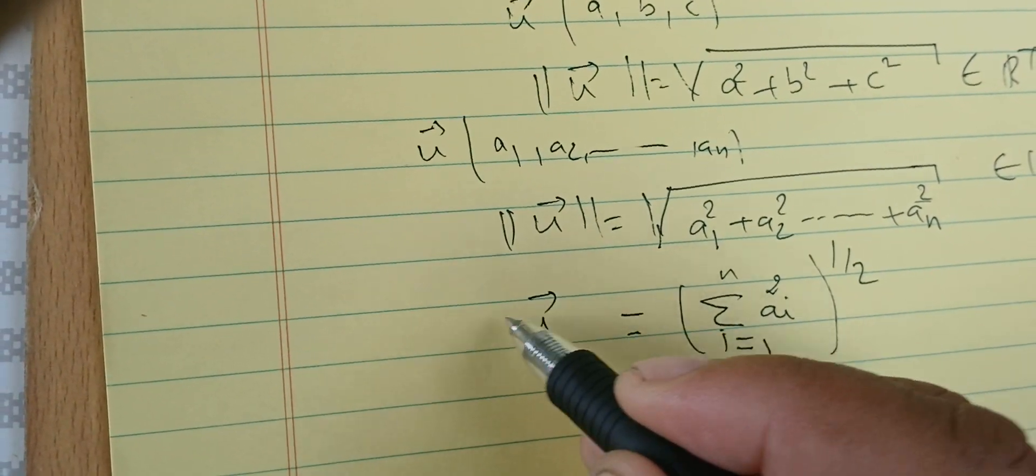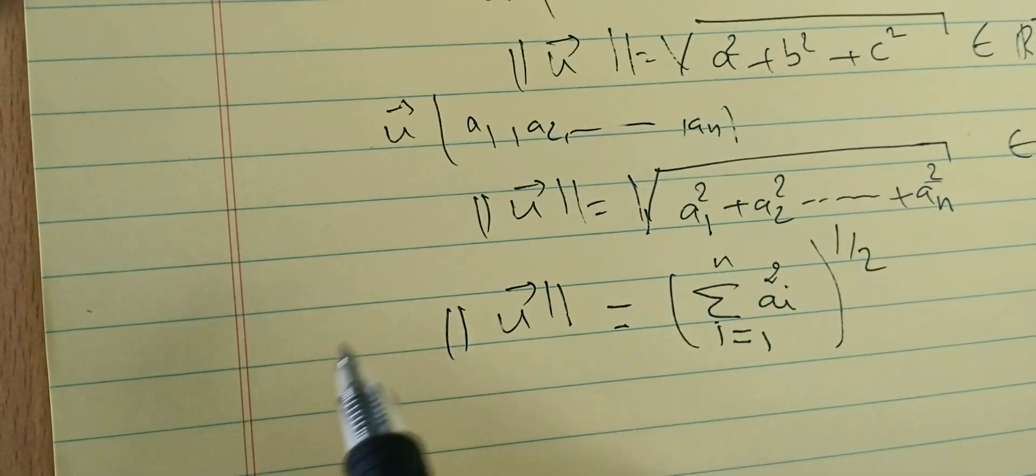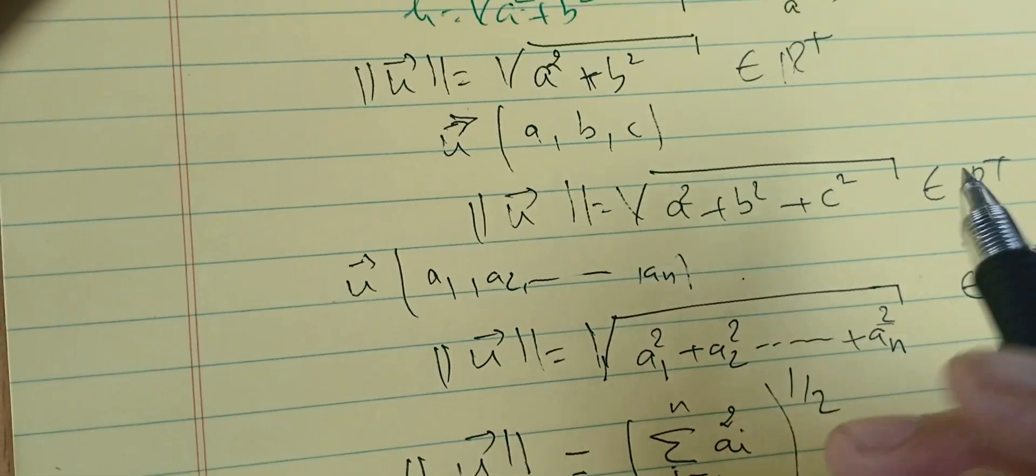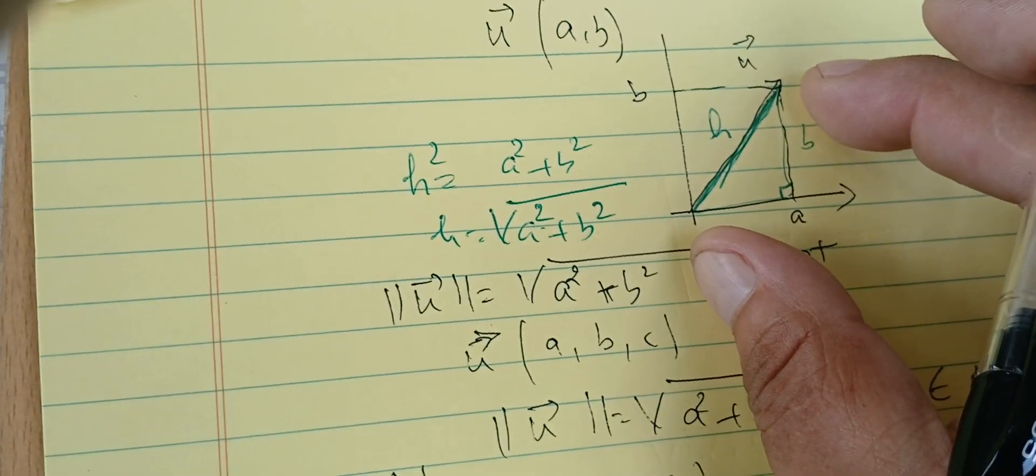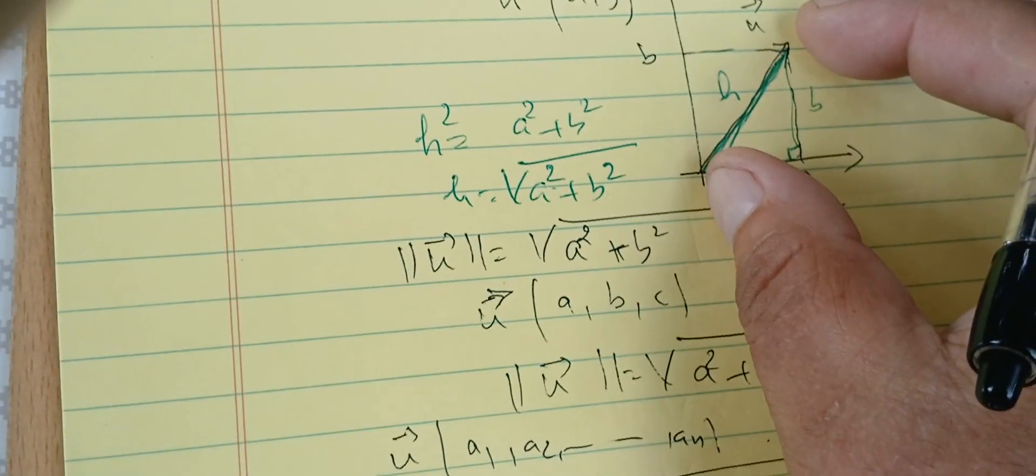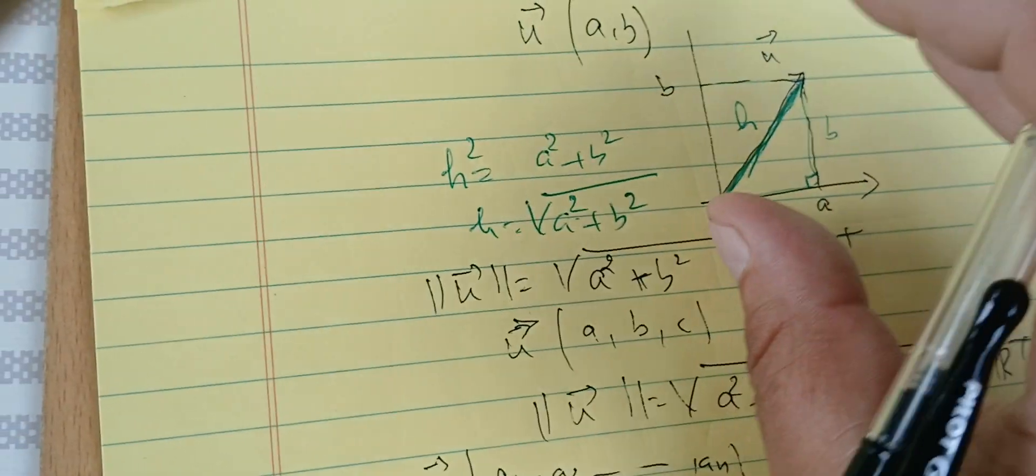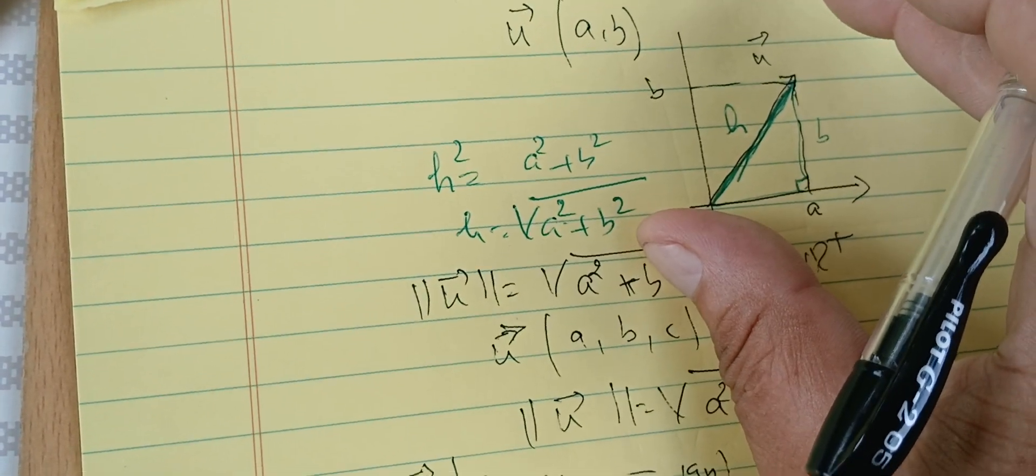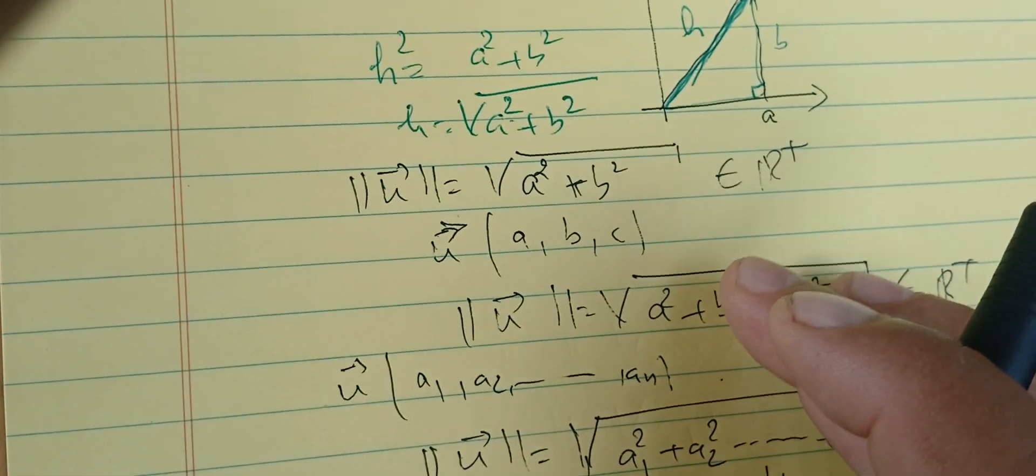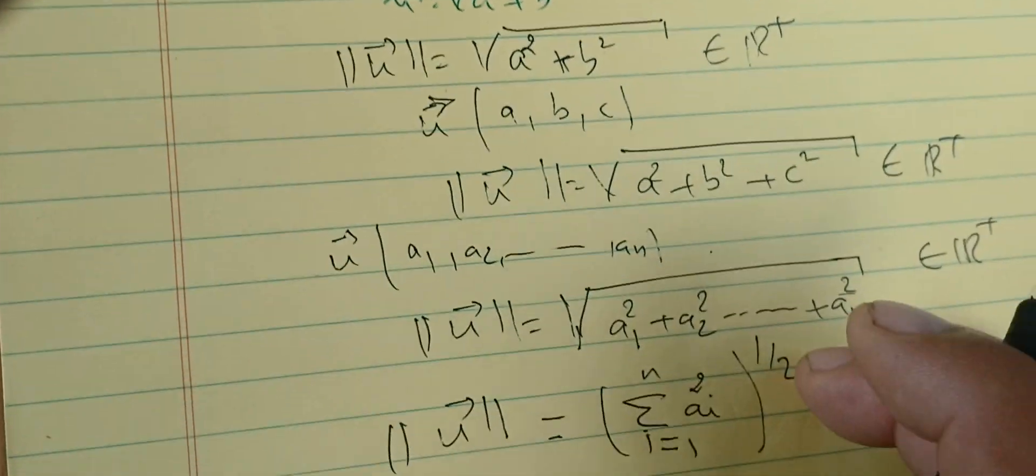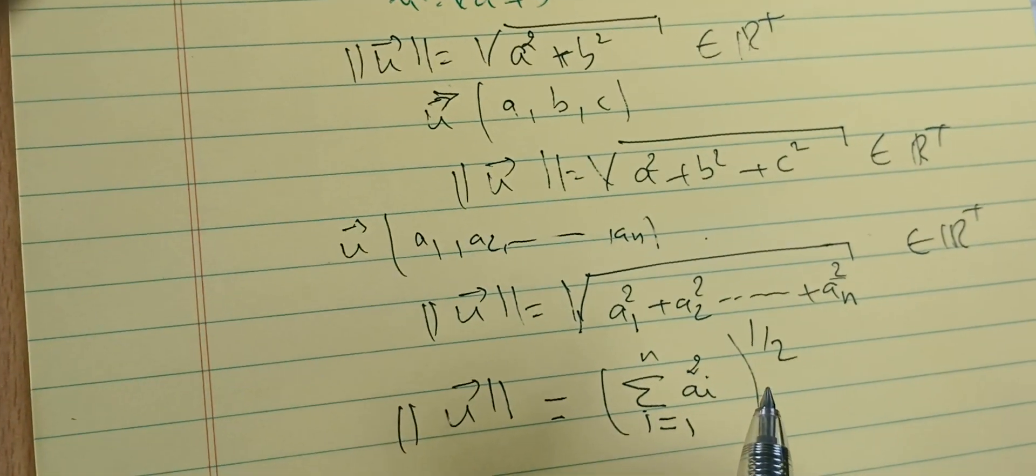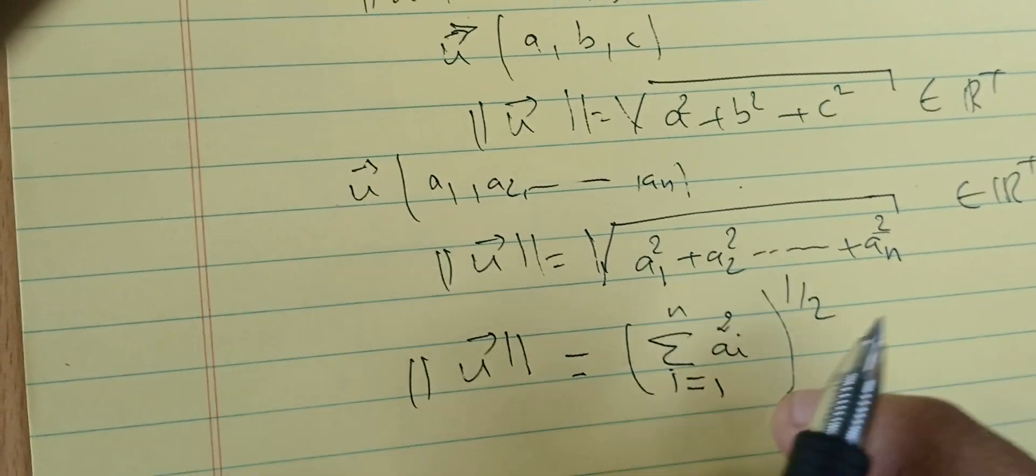So this is the same thing. In the case of 2D, this means the length of the vector. In 3D, it means the length of the vector, and in n-D, it means the same thing—the length of that segment. We're going to use this in the next sections.